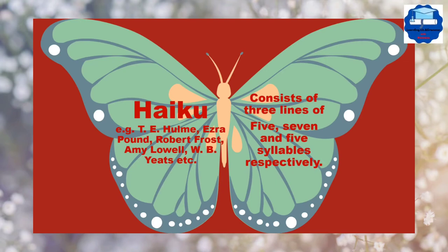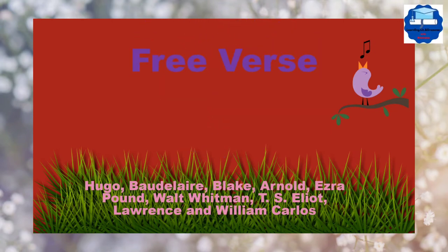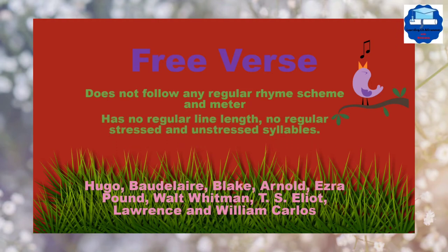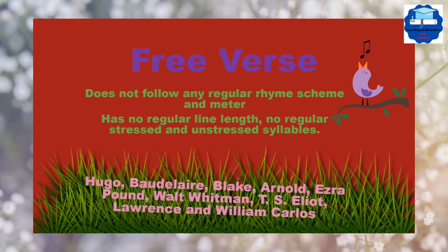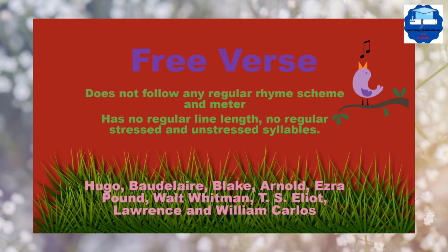Haiku expresses a single idea or image. Some poets have used Haiku very beautifully. For example, T.E. Hulme, Ezra Pound, Robert Frost, Amy Lowell and W.B. Yeats. Free verse, as the name suggests, does not follow any regular rhyme scheme and meter. It has no regular line length and no regular stressed and unstressed syllables. Hugo, Baudelaire, Blake, Arnold, Ezra Pound, Walt Whitman, T.S. Eliot, Lawrence and William Carlos Williams are some of the renowned poets of free verse.